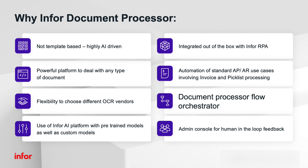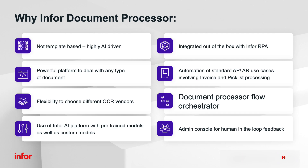In conclusion, the Infor Document Processor provides a comprehensive solution for digitizing and managing business documents. With its potent mix of OCR, AI, and machine learning, it boosts efficiency and adds substantial value by automating labor-intensive document processing tasks. Additionally, its seamless integration with the Infor ecosystem and RPA ensures quick implementation benefits across various automation scenarios. That wraps up our introduction to Infor Document Processor and its core capabilities. Thank you for watching, and be sure to stay tuned for more videos in the Infor OS series.